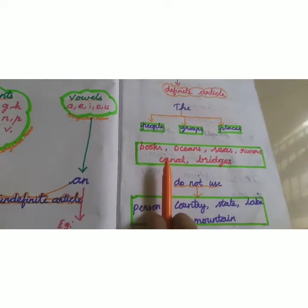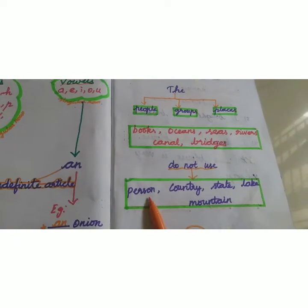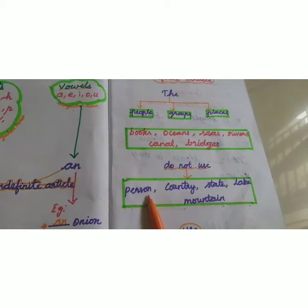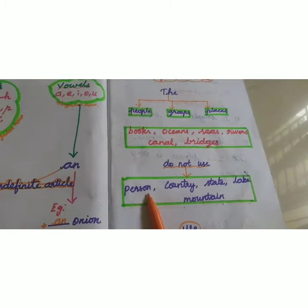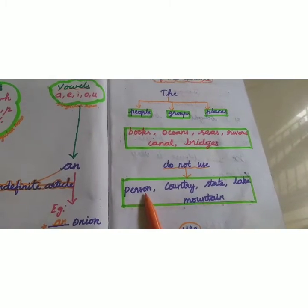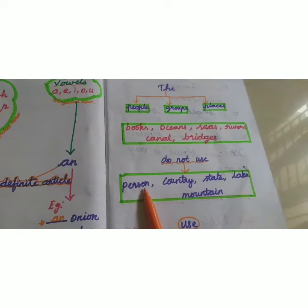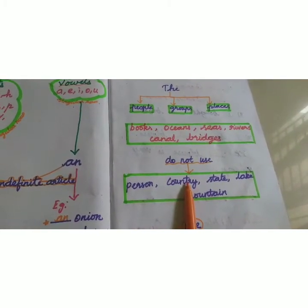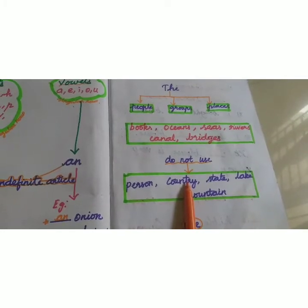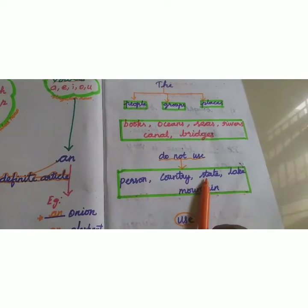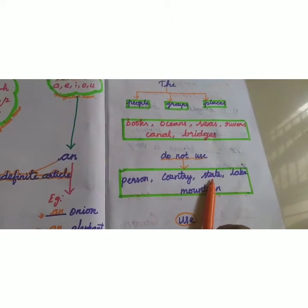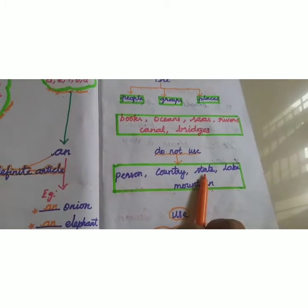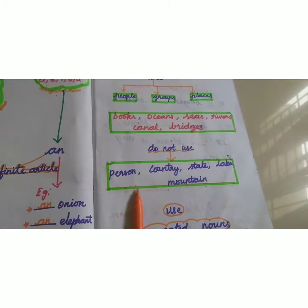Which nouns do NOT use THE? For person names — don't use THE. For example, don't write 'the Raja'; write only 'Raja'. Don't use THE before a person's name. For countries — don't write 'the India'; just write 'India'. Similarly, don't write 'the Tamil Nadu'; write 'Tamil Nadu'.